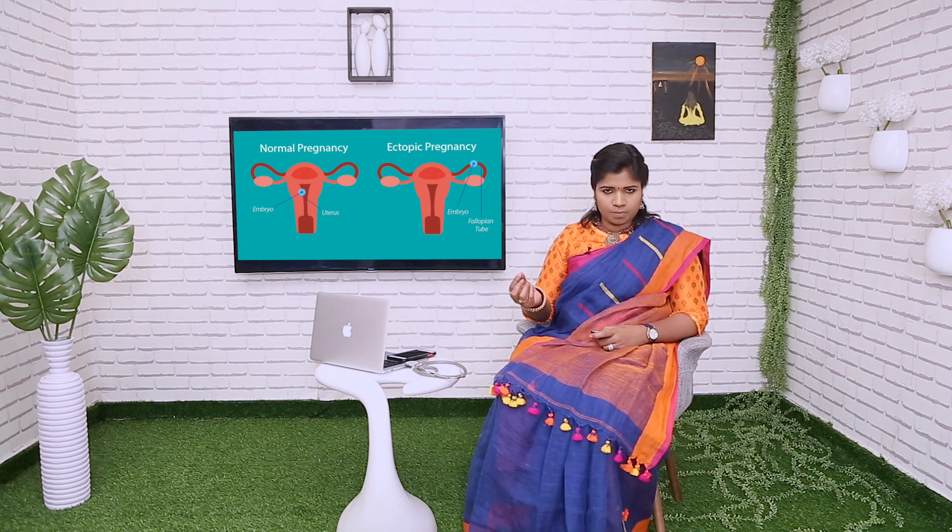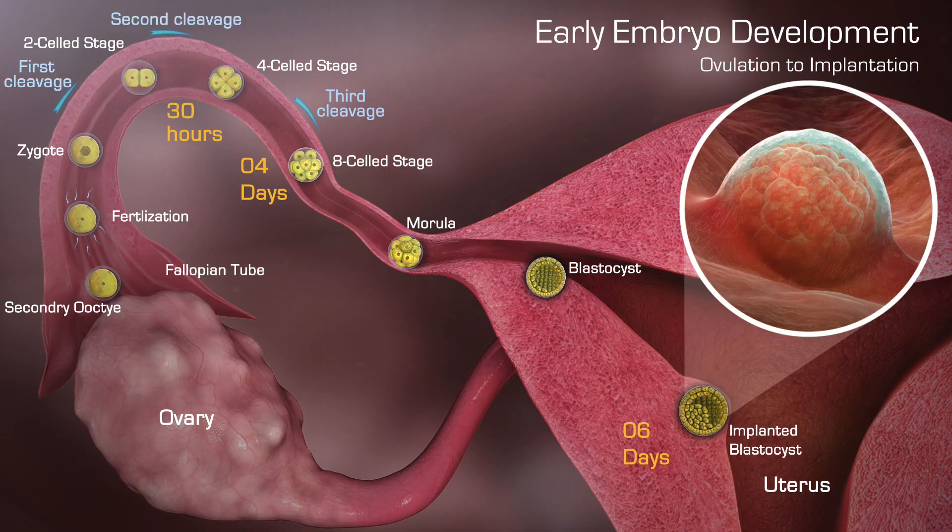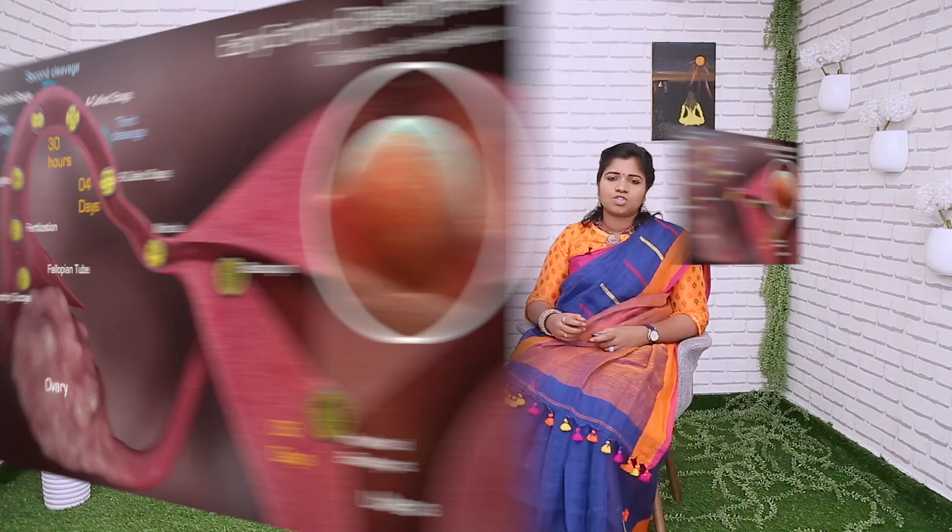So this fertilized egg when it stays inside the fallopian tube it is known as a zygote. Once when it is implanted it is known as a blastocyte. Once this blastocyte grows for up to 8 weeks and gets a heartbeat, it is known as a fetus.